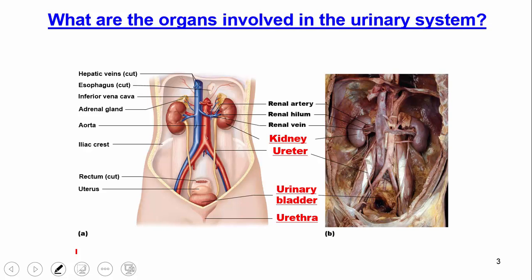So what are the organs involved in the urinary system? As I mentioned before, the key one is the kidney. The kidney is this bean-shaped organ that you'll see on either side of the medial line of your abdomen. The kidney is going to be retroperitoneal — it's behind the peritoneum, that sac that contains most of the abdominal organs. After urine is produced by the kidney, it comes down the ureter, travels into the bladder, and then out the urethra.